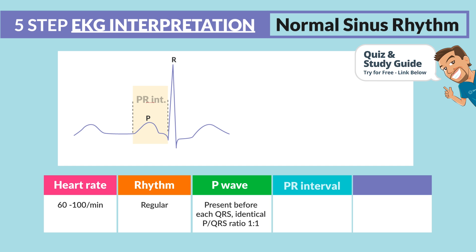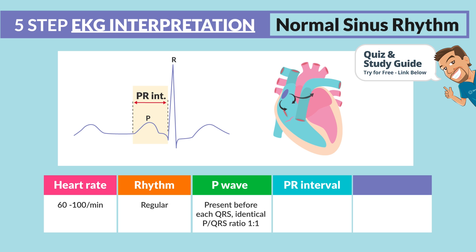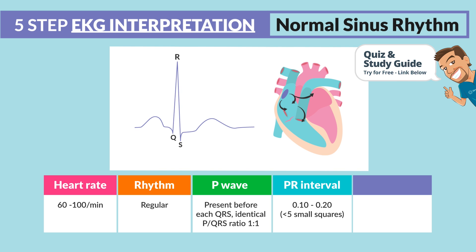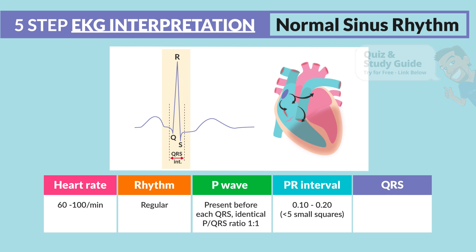Step number four is the PR interval, which basically measures the time it takes between the atrial contraction and the ventricular contraction. It should be five mini boxes or less, or to get fancy, between 0.10 and 0.20 of a second.